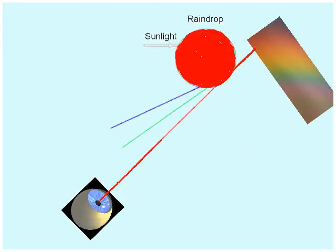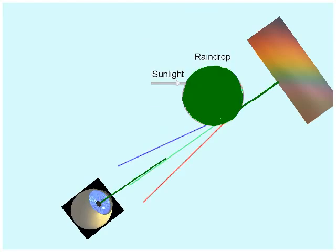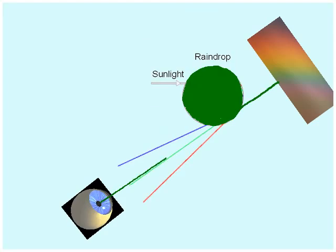So up high in the sky, you see a red raindrop. Down a little lower, your eye sees a green raindrop. And a little lower, a blue one. Because your eye doesn't see all that light bouncing around inside the raindrop, only the light that comes to your eye.